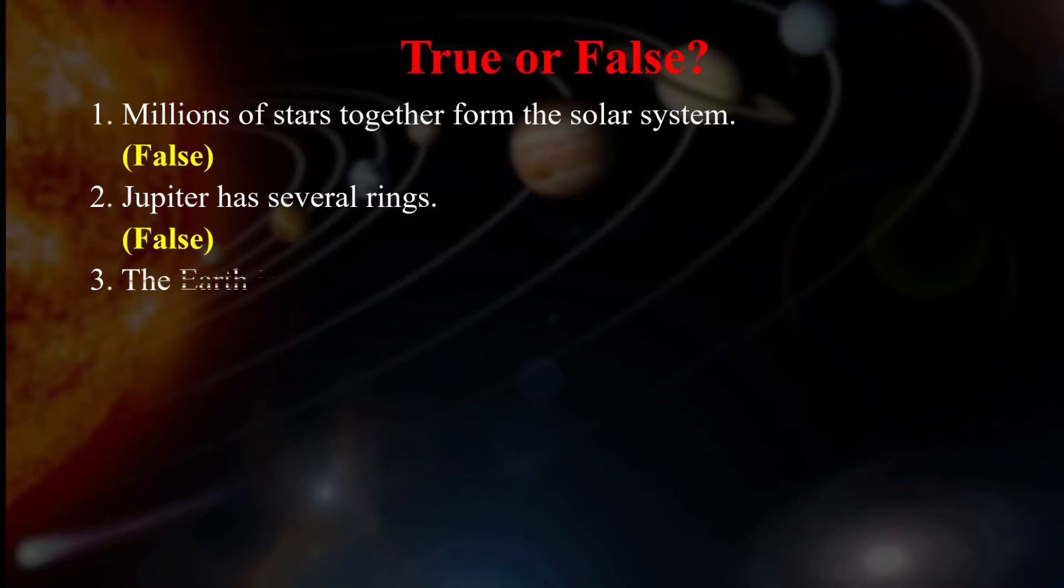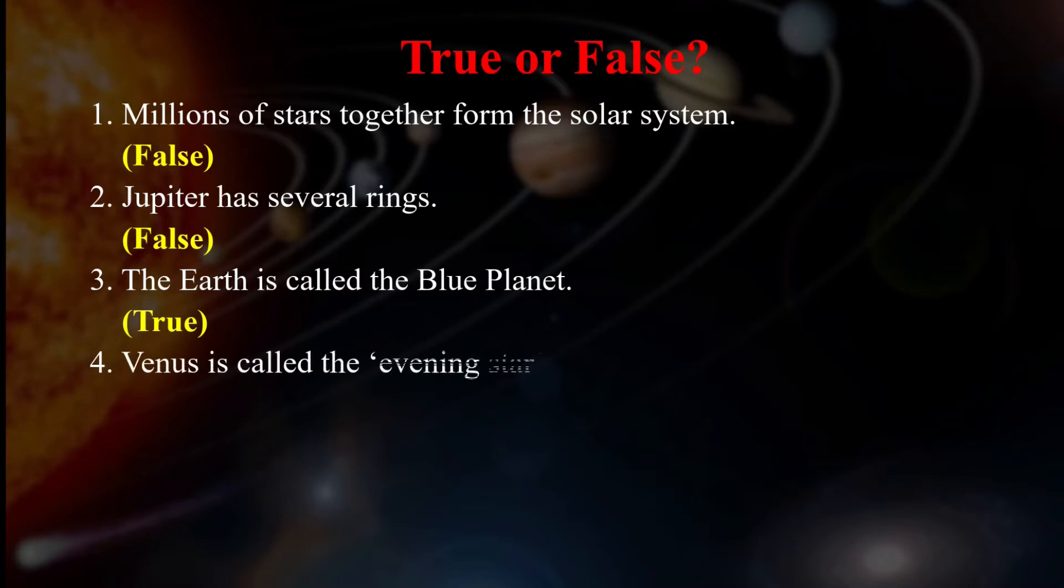Next, Jupiter has several rings. False, because Jupiter has red spot in it, while Saturn has several rings. Next, the Earth is called the blue planet. True. It is only the Earth which has life and it is also known as blue planet.